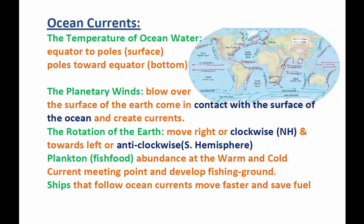Regarding temperature: the distribution of temperature on the surface of the earth is not equal. The polar areas — near the north pole and south pole — have very low temperatures. On the surface of the ocean, warm water moves from the equator towards the poles, and at the bottom of the ocean, cold water from the poles moves towards the equator. In this way, ocean currents are caused.